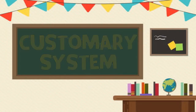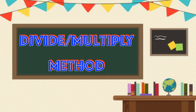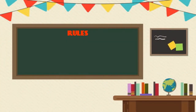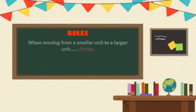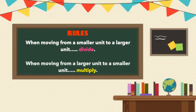When converting using customary measurements, we must use the divide or multiply method. In this method, the rules are simple: when moving from a smaller unit to a larger unit, divide. And when moving from a larger unit to a smaller unit, multiply.